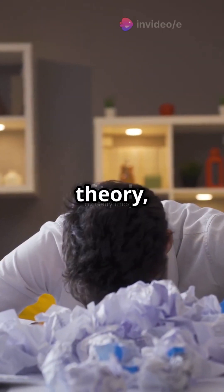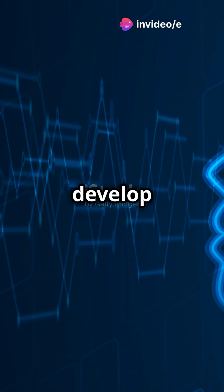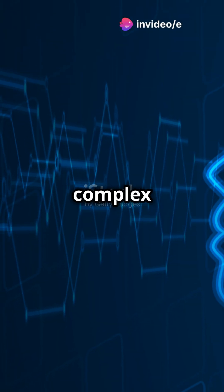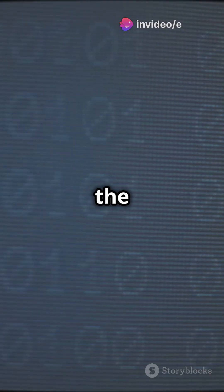One major outcome is computability theory, which explores these limits and helps develop efficient algorithms for complex problems. It's like the rulebook for what computers can and can't do.